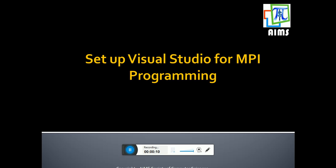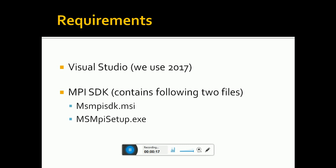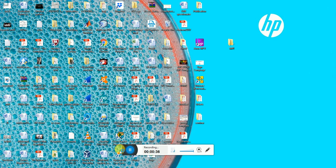Today we're going to show you how to set up Visual Studio for MPI programming. Here are some requirements: Visual Studio — in our case we use 2017 — and in the MPI SDK pack we have msmpisdk.msi and msmpisetup.exe. Let us start by showing you how to download these required files. For the MPI SDK, we assume that you have Visual Studio already installed on your computer.